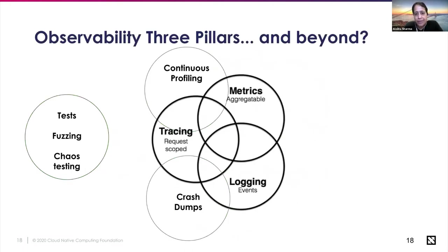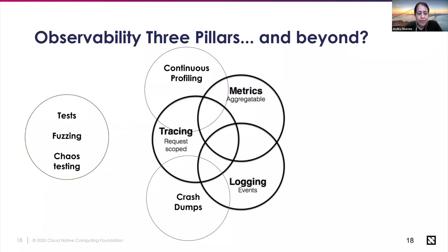This is a moving target right now, because there are trillions and trillions of petabytes of data being collected from systems that we are constantly monitoring. As we move towards more sophisticated observability, testing, fuzzing, and chaos testing are all areas that will intersect with how we make systems more observable and build end-to-end pipelines for handling that.